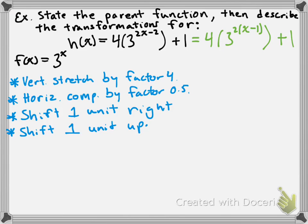Now I'm going to talk about the asymptote, the y-intercept, and the range for this transformed function. For the parent function f of x equals 3 to the power of x, the asymptote is at y equals 0 — the x-axis. Since we've shifted the function up 1 unit, all the points get shifted up 1 unit, so they're approaching 1 instead of 0. Therefore, the equation of the asymptote is y equals 1.